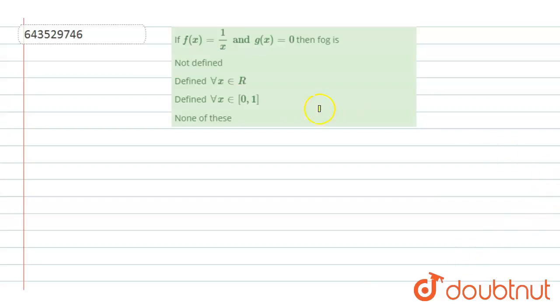Hello everyone, today we are going to discuss one more question. The question says that f(x) equals 1 by x and g(x) equals 0, then f of g is...